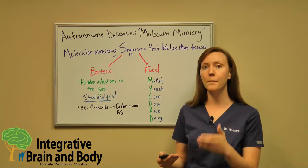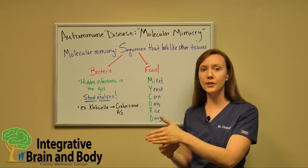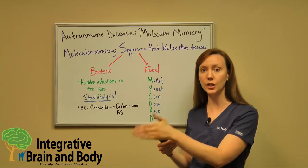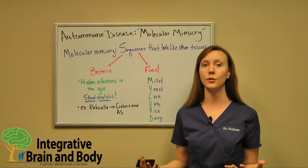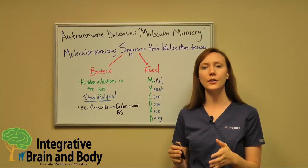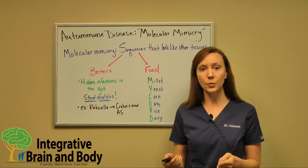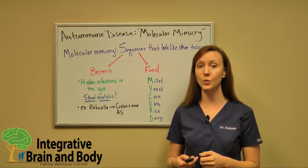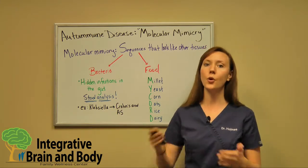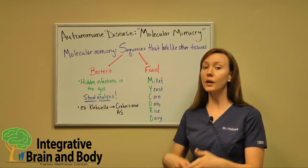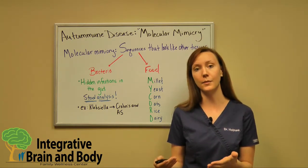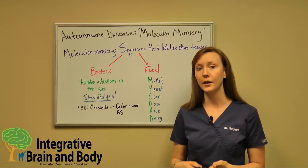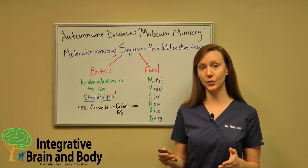The bacteria mimics our genes. We naturally start to attack the bacteria, but since the bacteria looks so much like some of our own genes or sequences, we end up with an autoimmune condition. So it's absolutely imperative to get checked for infections. The best way to get checked for specific infections is through a stool analysis. I see Klebsiella show up in so many stool analyses. A lot of patients say they've been scoped by their primary doctor and everything came back normal — you won't see this type of infection on a scope, but you'll see it on a stool analysis, which is why a stool analysis is so important.